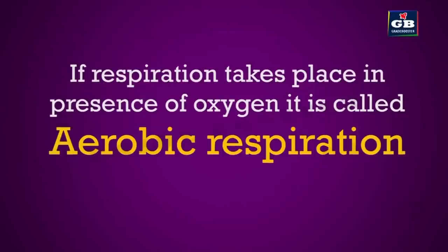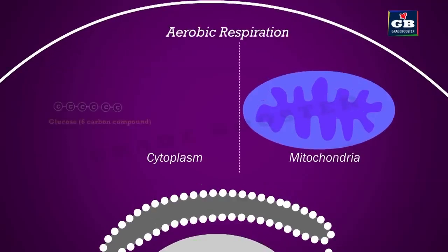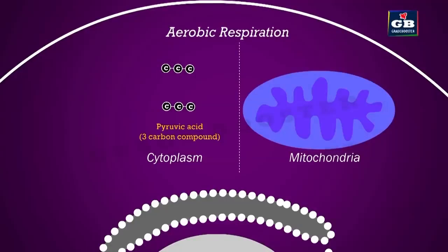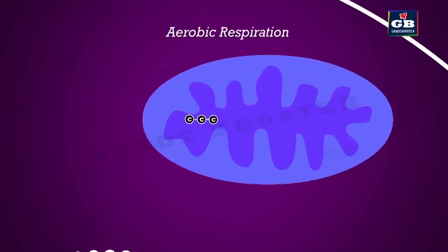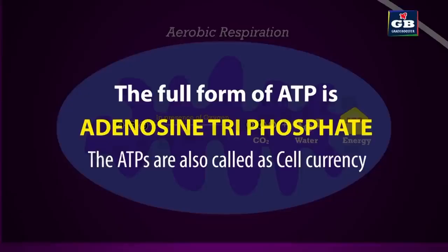The respiration that takes place in the presence of oxygen is called aerobic respiration. In aerobic respiration, one glucose molecule splits into two pyruvic acid molecules in the cytoplasm of the cell. This pyruvic acid then enters the mitochondria, where it turns into water and carbon dioxide, releasing energy. This energy gets packed into ATP molecules — adenosine triphosphate.